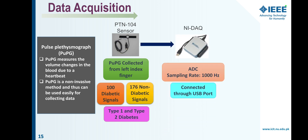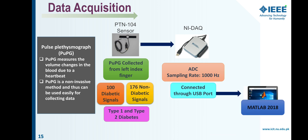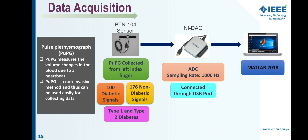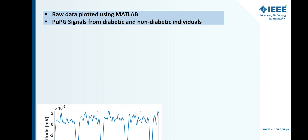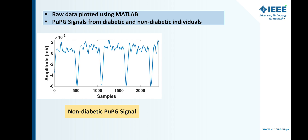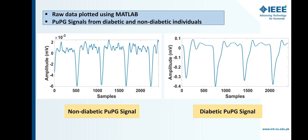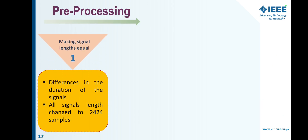An ADC component was used to convert the analog signals to digital form for processing and analysis. It was connected through a USB port, and data was sampled at 1000 Hz frequency. For analysis, we used MATLAB 2018. Here is the raw signal plot using MATLAB of a non-diabetic pulse plethysmograph signal, and here is the diabetic pulse plethysmograph signal.